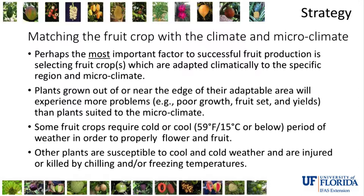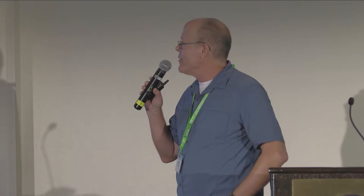Some plants don't do well with cool temperatures — temperatures below 15 degrees Celsius or 60 degrees Fahrenheit. It's easier to match the crop to the environment because you're not going to change the environment. Key factors for selecting a site include extremes in temperature — both cold and high temperatures. Papaya is a good example: if temperatures consistently exceed 95 degrees Fahrenheit, the flowers revert from bisexual or female to male, and you get no fruit production.